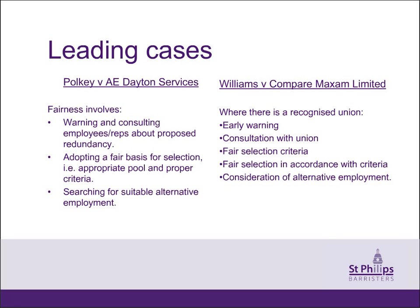A further leading case on procedural fairness in redundancy is Williams and others v Compair Maxim Ltd. That case concerned a recognised trade union. The employer informed the union of impending redundancies, sought volunteers for redundancy, but then proceeded to select employees for compulsory redundancy without reference to the union and without any form of individual consultation. The Employment Appeal Tribunal held that it would be impossible to lay down detailed procedures which all reasonable employers would follow in all circumstances, because fairness must depend on the circumstances of each case. However, where employees are represented by a recognised union, a reasonable employer will usually seek to act in accordance with a number of principles set down in that case and depart from them only with good reason.